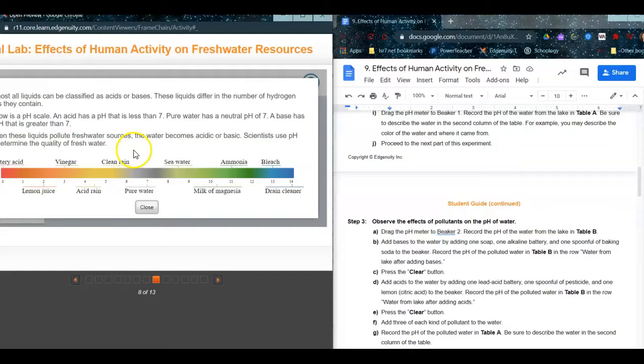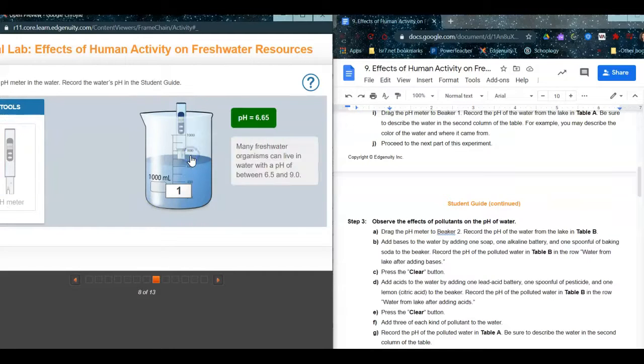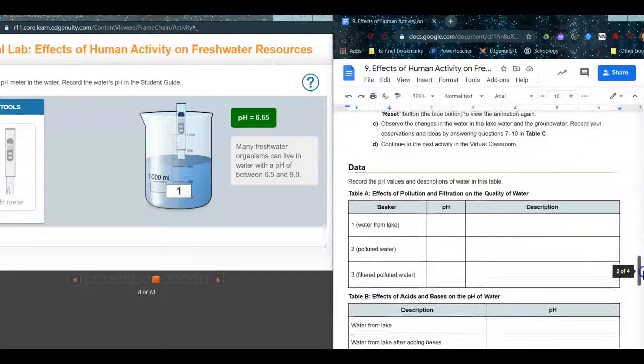So let me get to, so this is an example of that pH scale. It shows you the scale. It goes from 0 to 14, and examples of different things on that scale. So you'll just drag that pH meter over here. You're going to write down that number in, so I'll go a little back here, and table A.